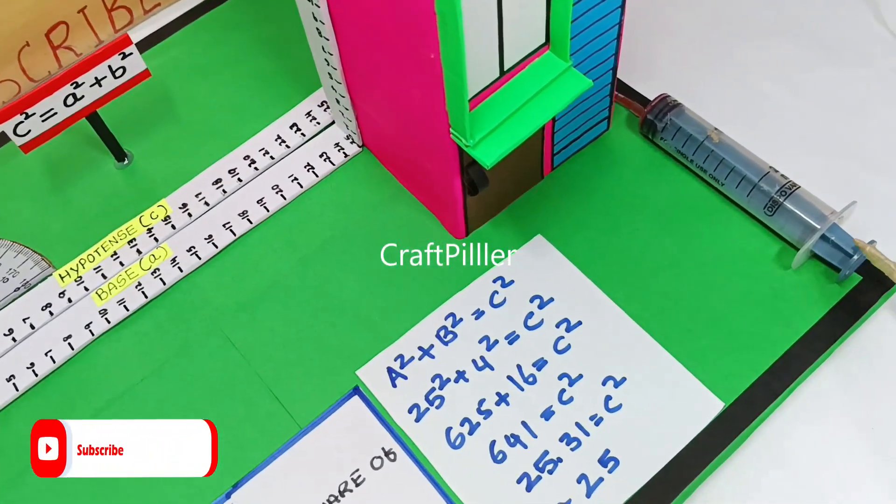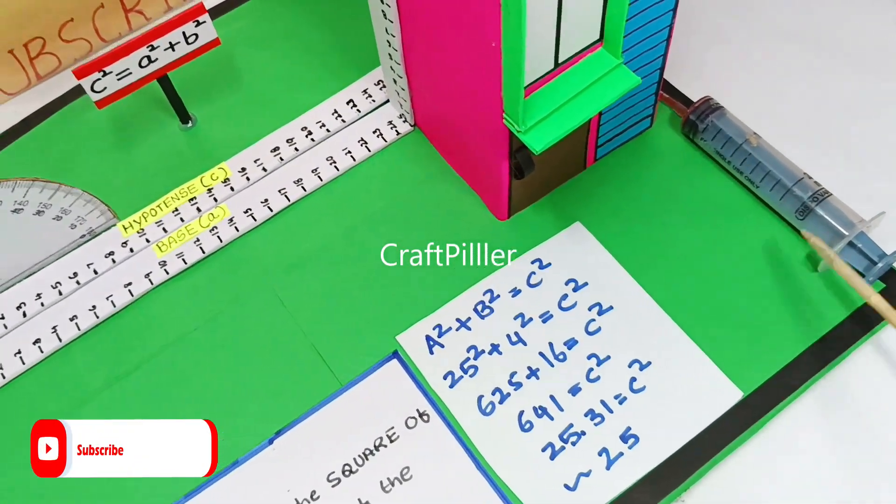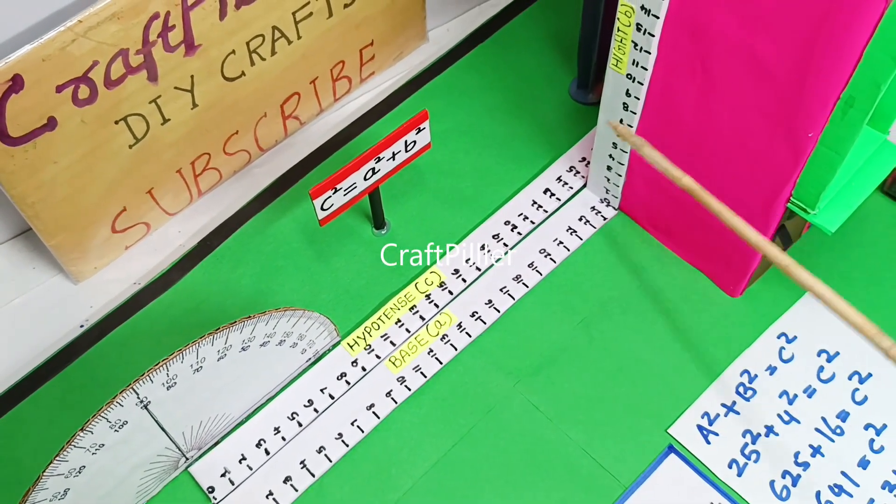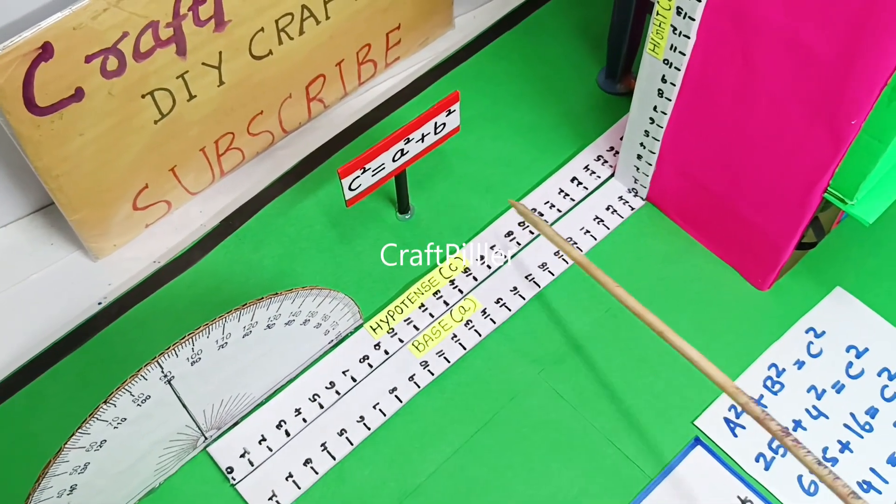We have made a syringe arrangement. Whenever we pull this syringe, the height increases as well as the hypotenuse also increases.